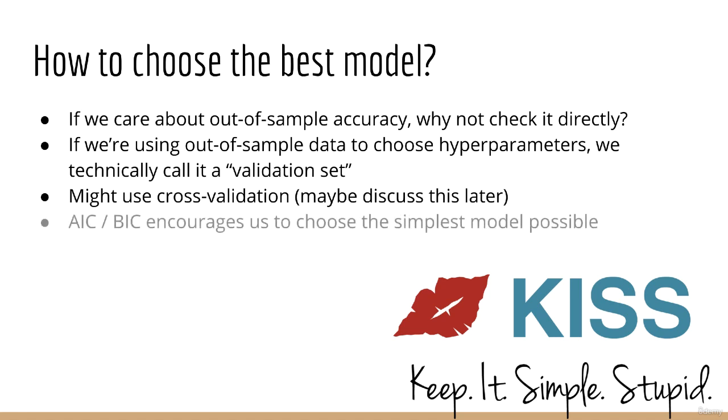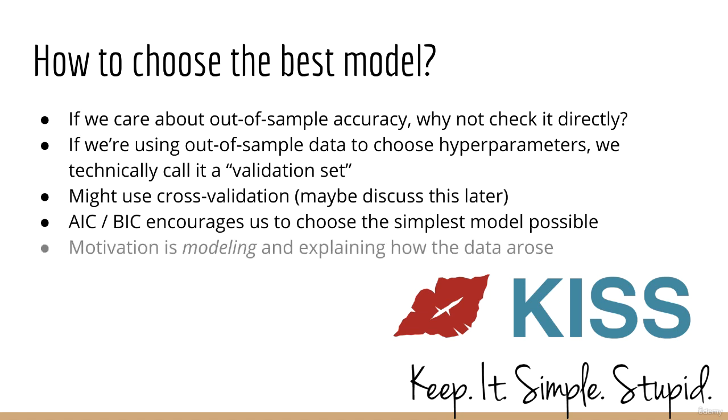However, one reason to use the AIC and the BIC is because we really are trying to achieve the simplest model possible. As you recall, one of our main motivations is modeling the data and explaining how it arose, rather than making predictions. If this is our motivation, then it makes sense to want the simplest model possible that can adequately explain the data that we saw.